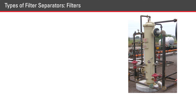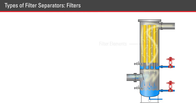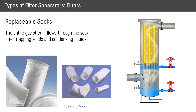Inside the filter separator canister are filter elements, either replaceable socks or coalescing filters. In a replaceable sock filter, the entire gas stream flows through the sock filter, trapping solids and condensing liquids.